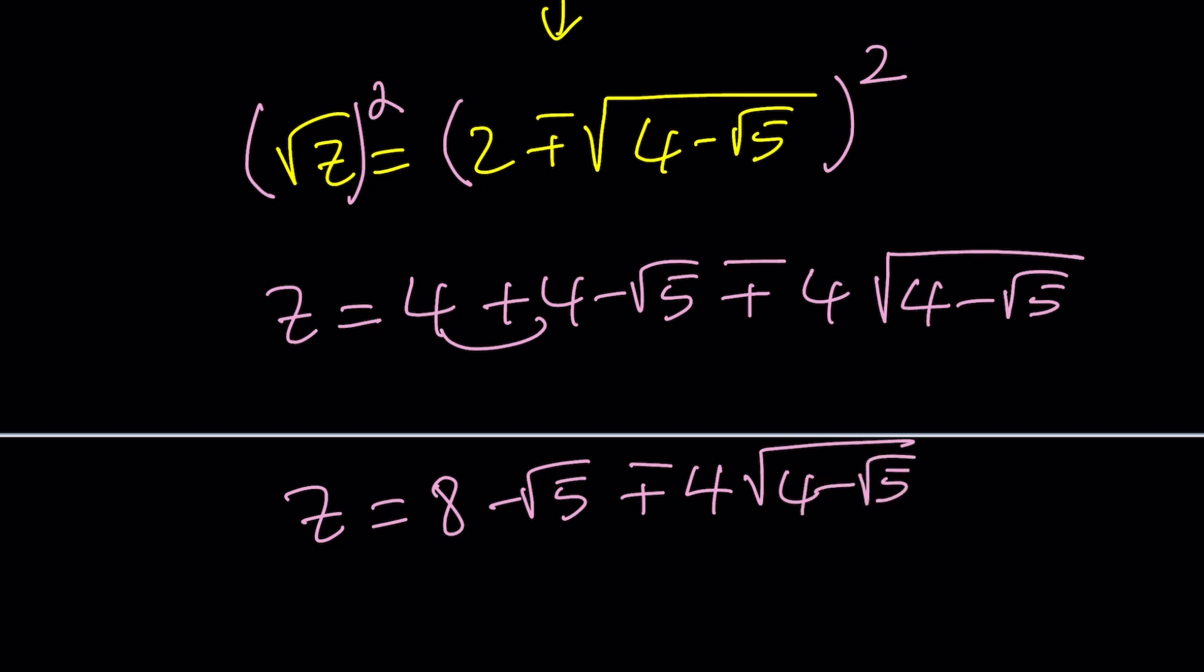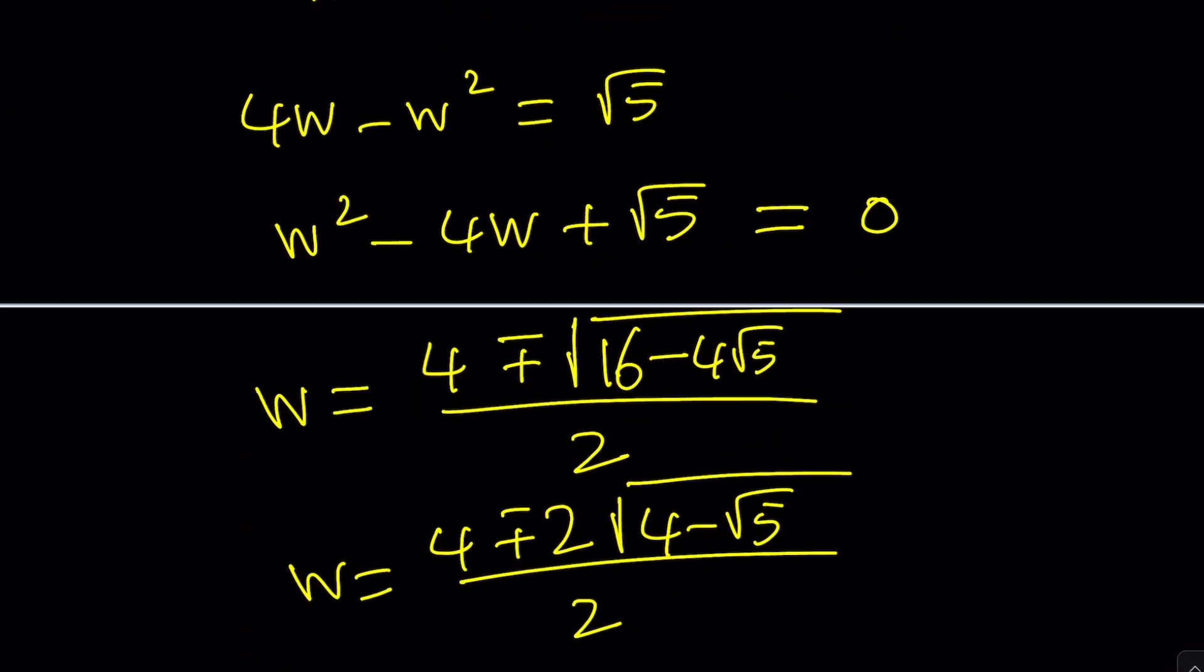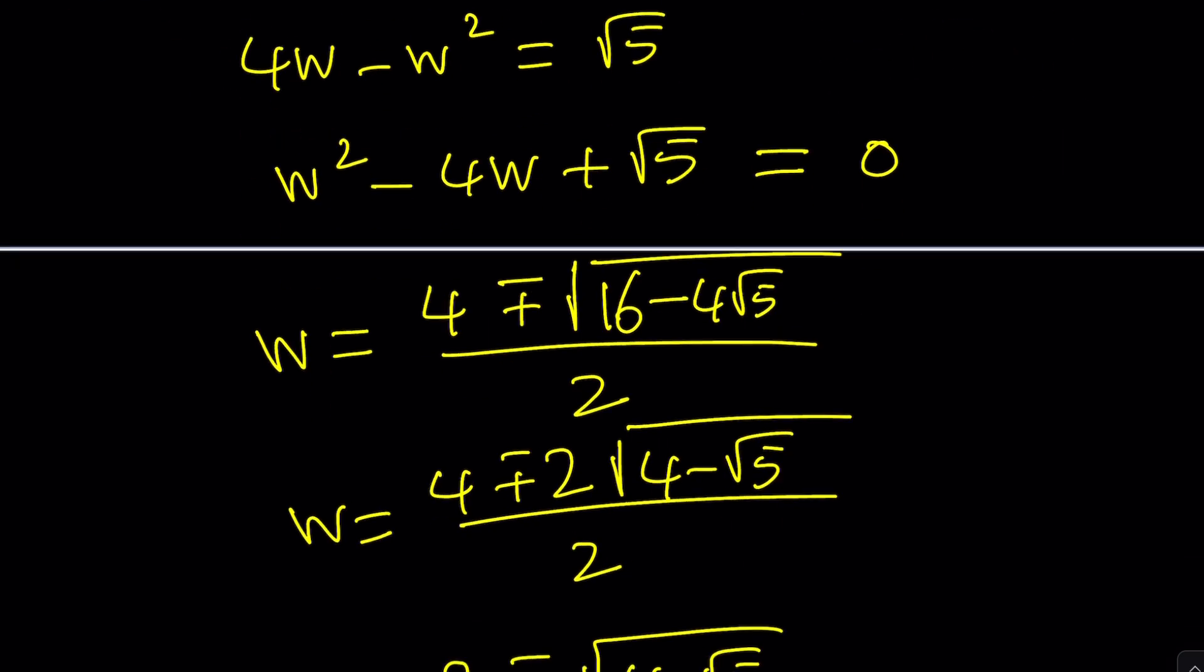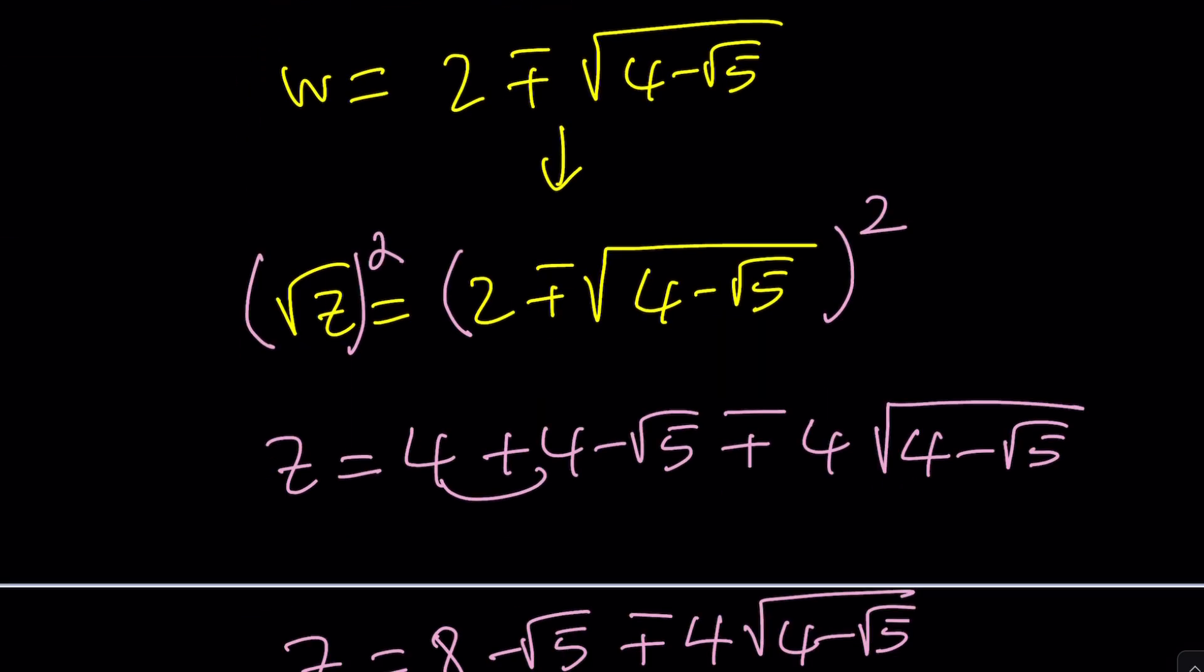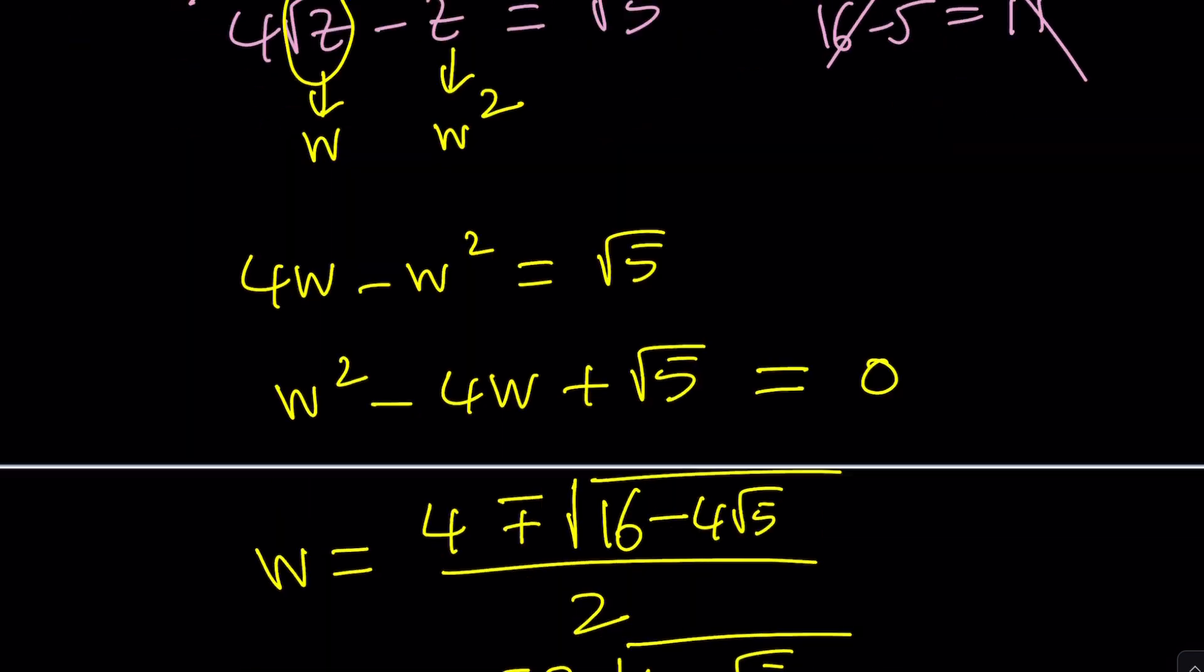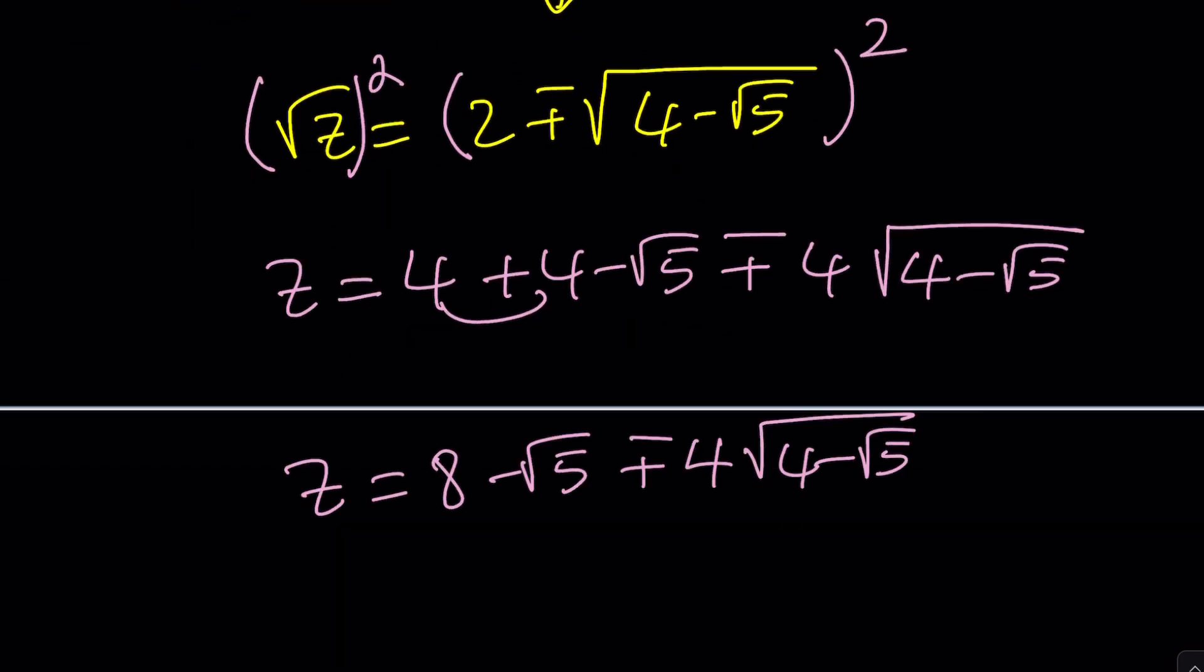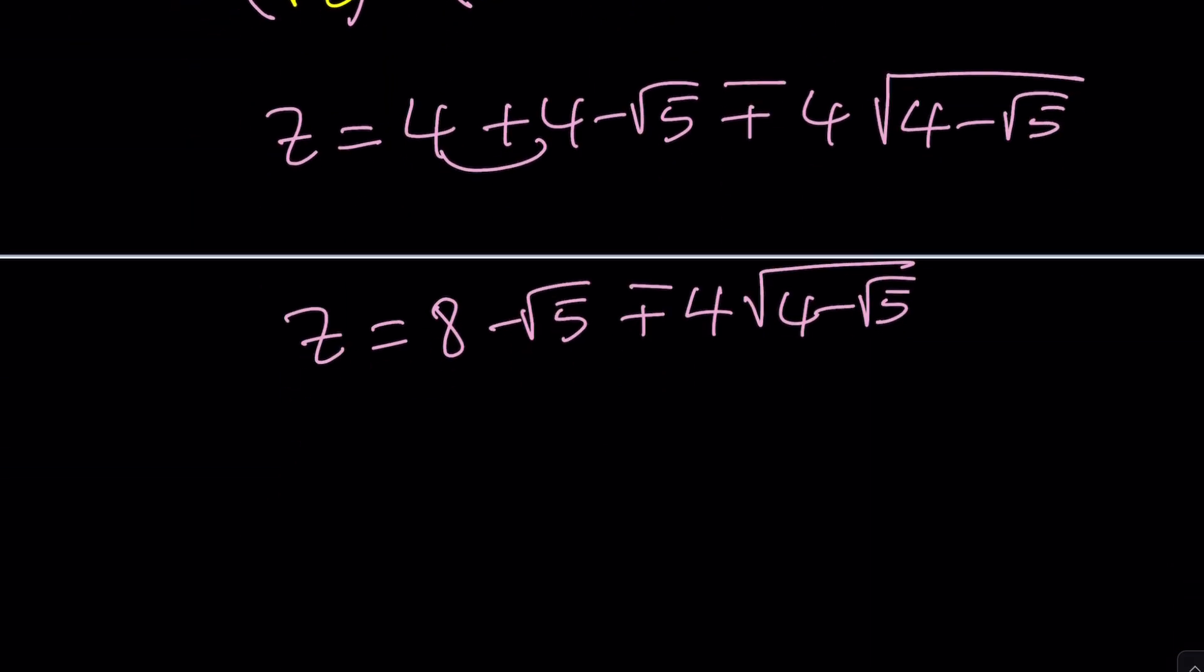Did it actually give us the exact same answer? Or did we get a different answer? Looks like 8 - √5 ± 4√(4 - √5). So those two answers agree with each other, okay?